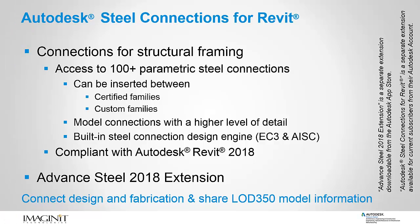Autodesk Steel Connections for Revit 2018 provides access to more than 100 parametric steel connections in Autodesk Revit 2018, enabling connections to be modeled with a higher level of detail. The application also includes a built-in steel connection design engine based on US and European codes. This functionality helps bridge the gap between design and fabrication, as both members and connections can be synchronized between Revit and Advanced Steel for detailing. With Steel Connections for Revit, users can take advantage of model-based collaboration to create better coordinated designs and documents that extend to fabrication.